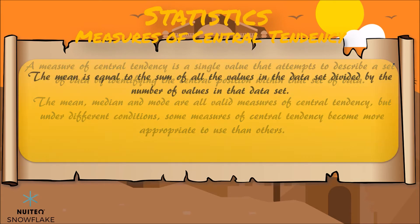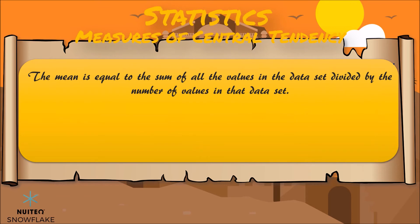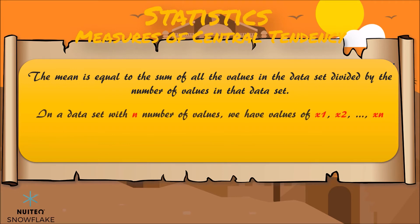For example, the mean is equal to the sum of all the values in the data set divided by the number of values in that data set — in other words, an average. As you can see here, if we have n values in a data set and they have values x1, x2, etc., the sample mean will be given by the following formula.